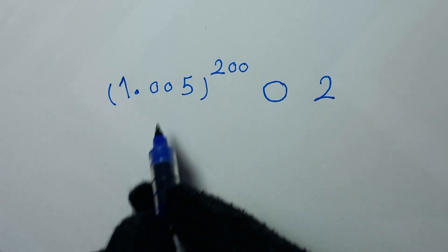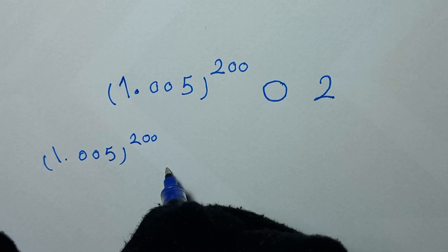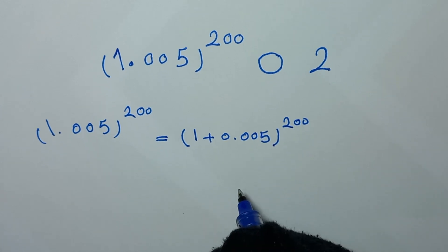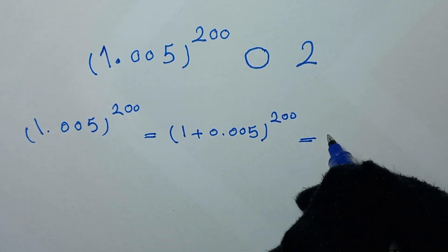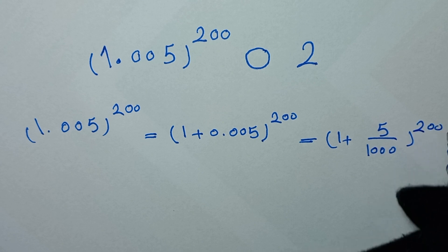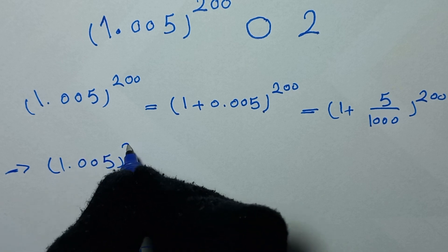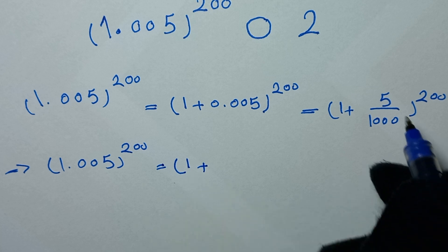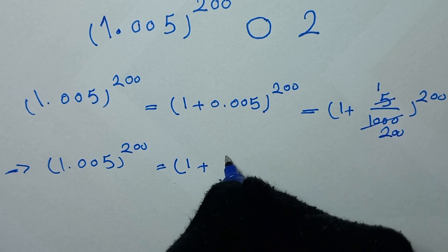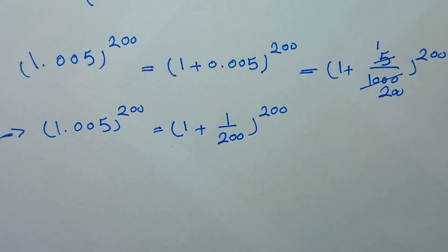In the first step, we start with 1.005 to the power of 200. We can write this as (1 + 0.005)^200, which equals (1 + 5/1000)^200. Simplifying by dividing numerator and denominator by 5, we get (1 + 1/200)^200.